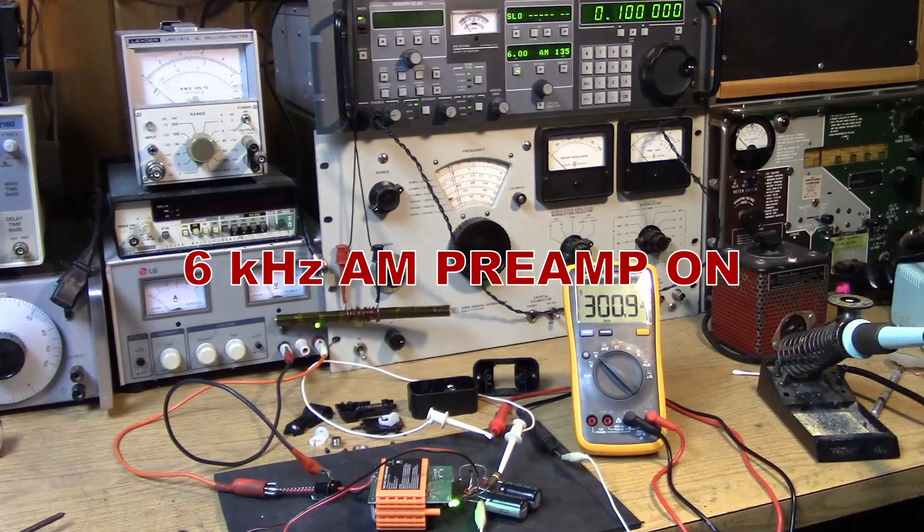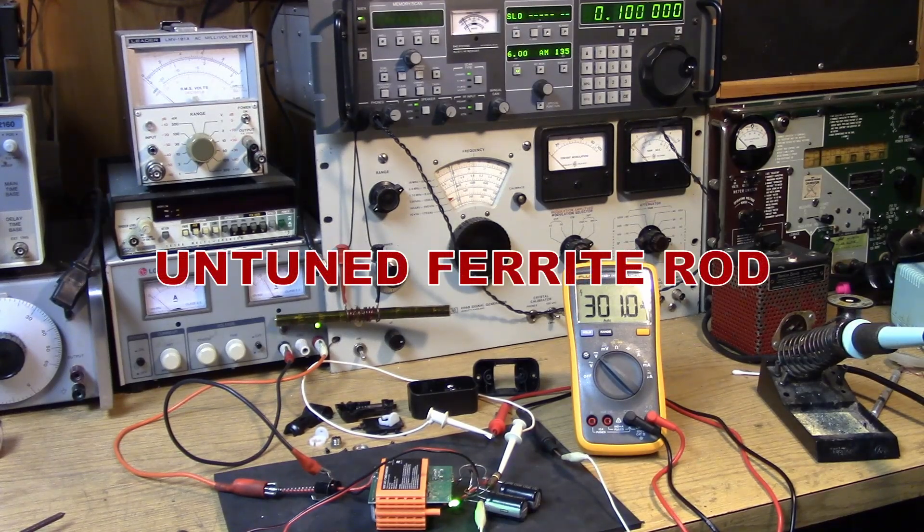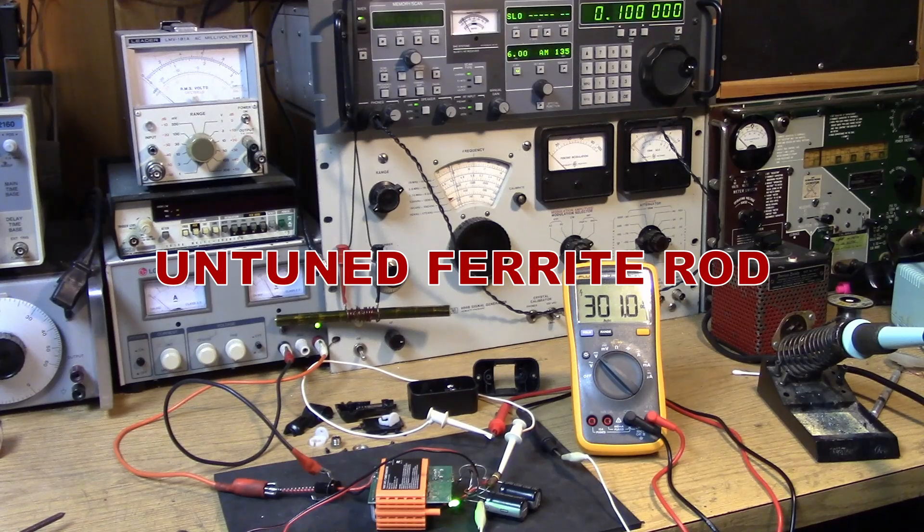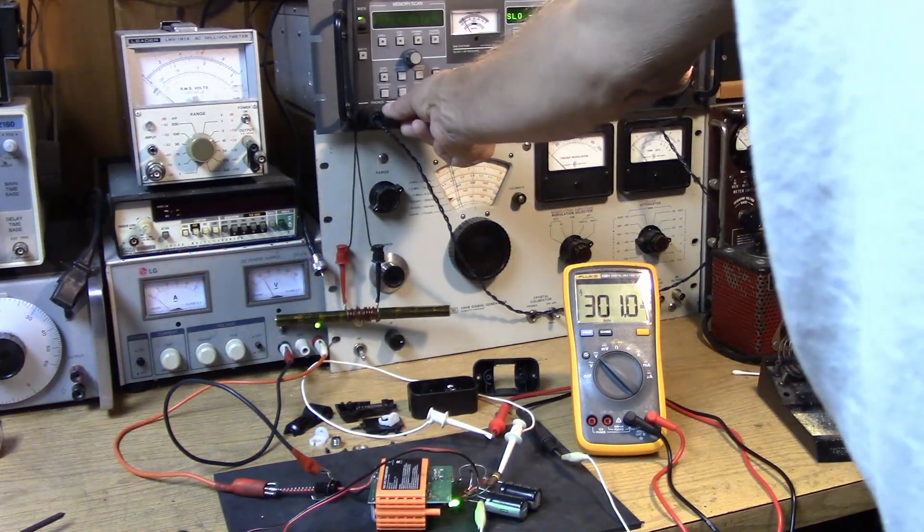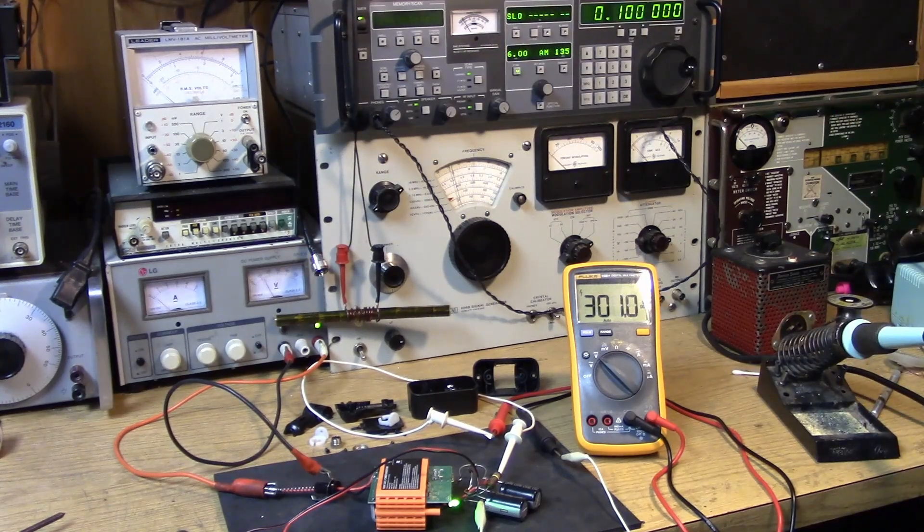So, I have the receiver tuned for 6 kilohertz bandwidth at a frequency of 100 kilohertz. So, let's turn that up. That's definitely us. Let's turn it off.